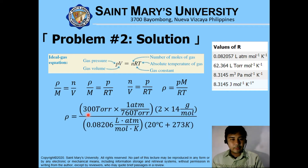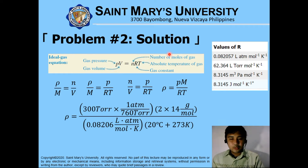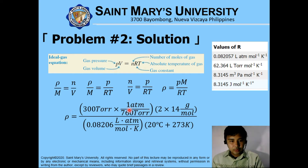From the given, we could actually use the values of R provided here. I will make it a point that you could actually use any of these four values of R, and depending on the given problem, if the value of R is given, you could use that one. The main point here is you can use 62.364 liter Torr over mole Kelvin, or just stick to only one value of R and then just try to convert it. One atmosphere is equivalent to 760 Torr.